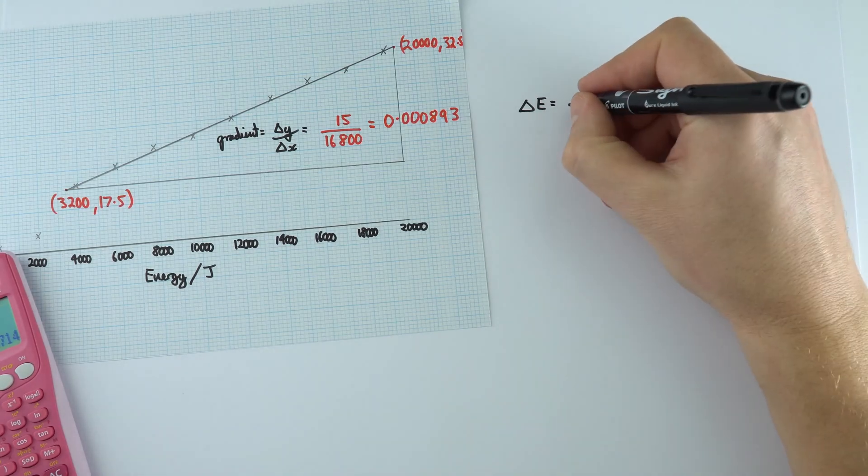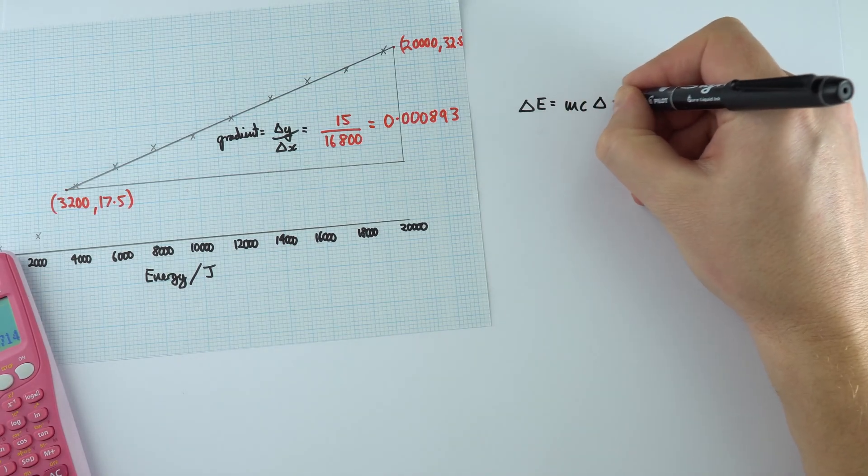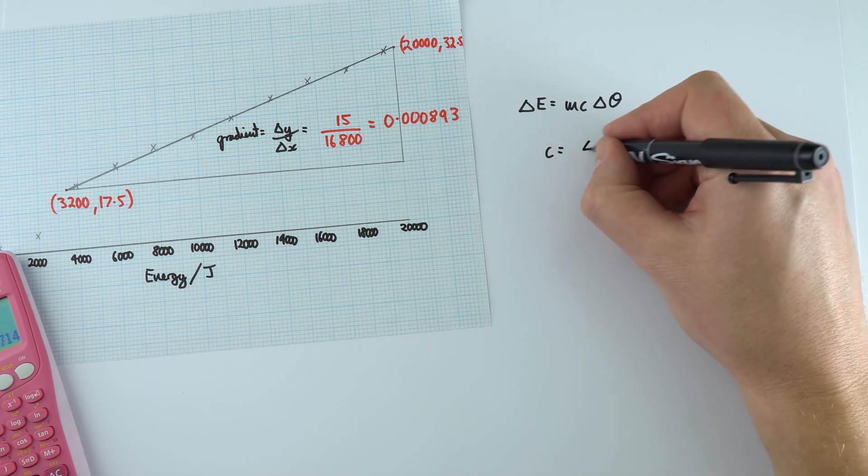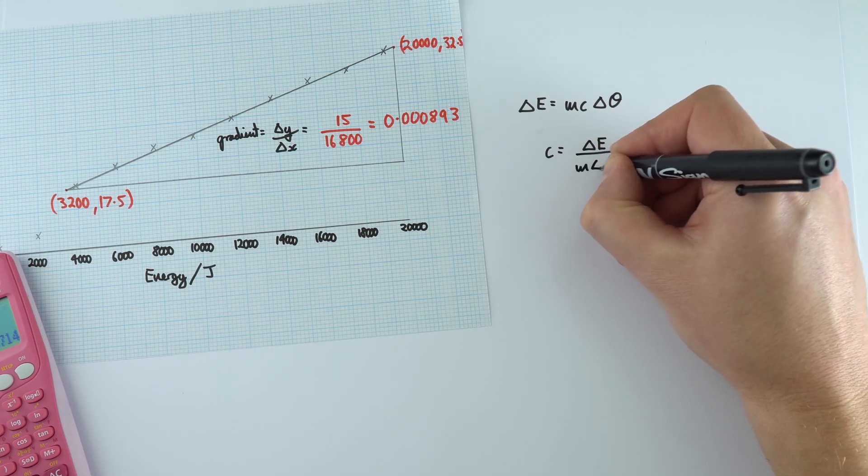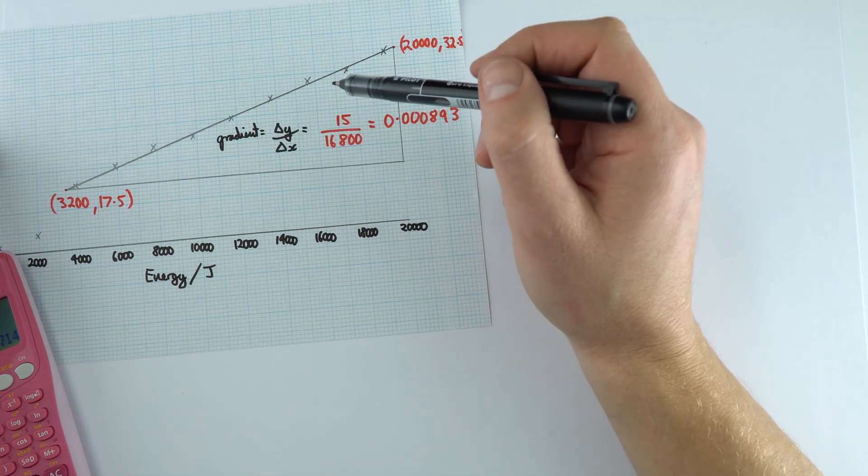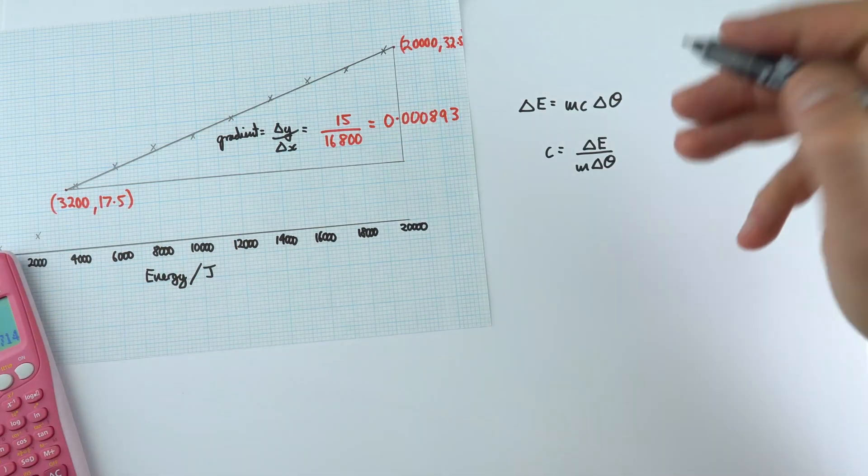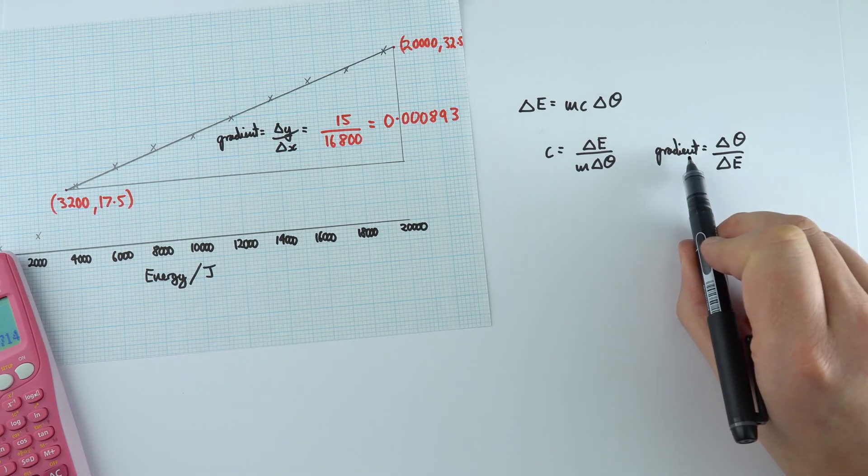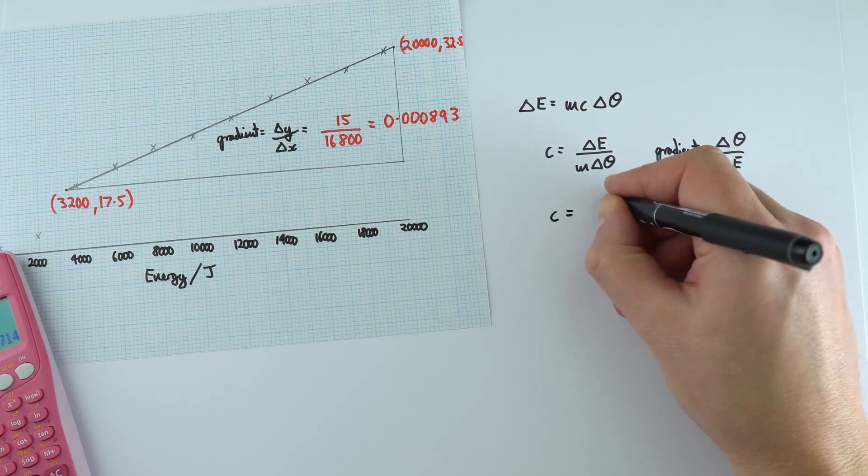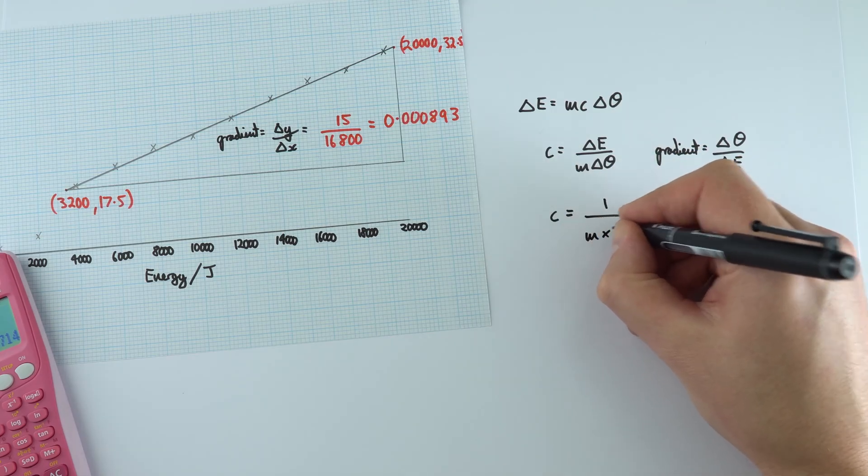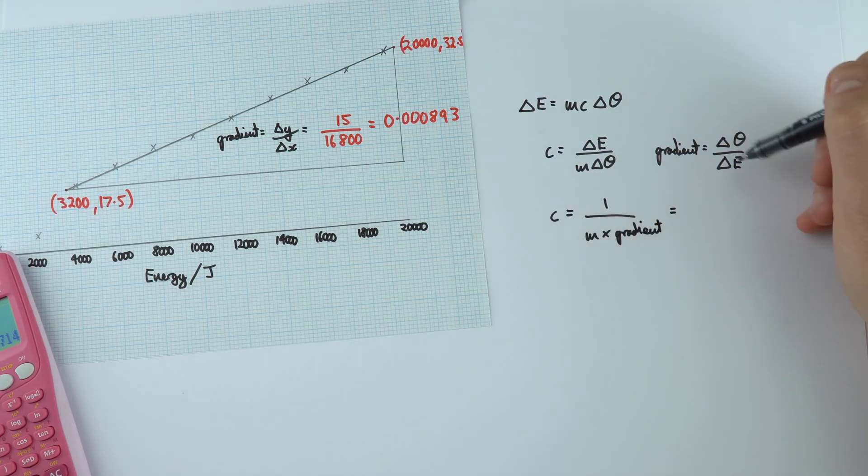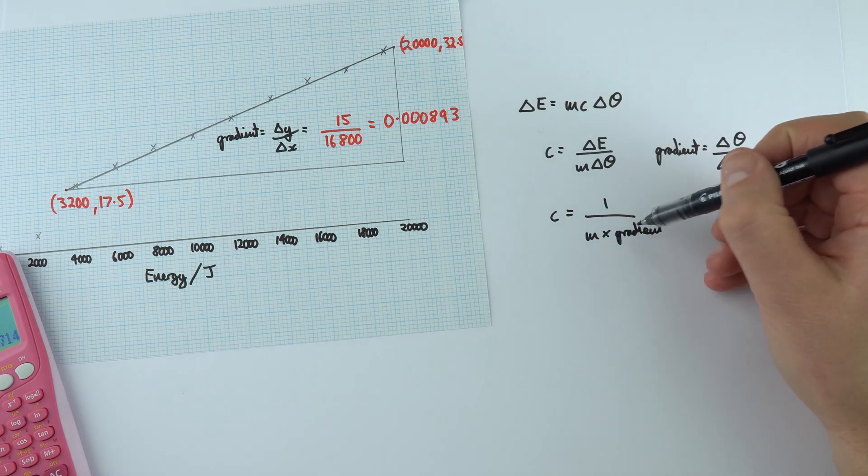Now the equation says that the energy transferred is equal to mc delta theta. And that means c, the specific heat capacity, is equal to the change in energy divided by m delta theta. Now when we worked out the gradient, it was our change in temperature divided by the energy. And that means we can use our value for the gradient into this equation to say the specific heat capacity equals 1 divided by the mass multiplied by the gradient that we've just worked out.